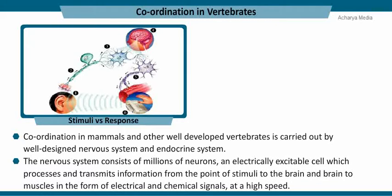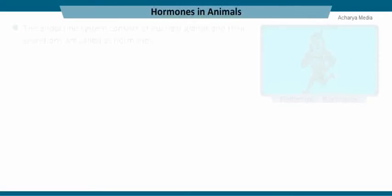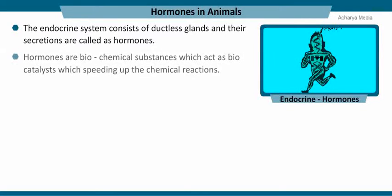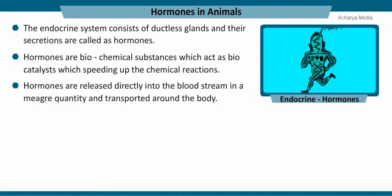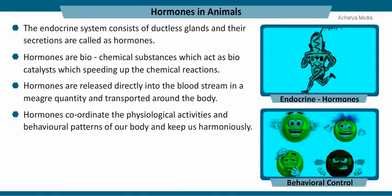Coordination in mammals and other well-developed vertebrates is carried out by a well-designed nervous system and endocrine system. The nervous system consists of millions of neurons, electrically excitable cells which process and transmit information from the point of stimuli to the brain, and from the brain to muscles, in the form of electrical and chemical signals at high speed. These messages are generally called nerve impulses. The endocrine system consists of ductless glands whose secretions, called hormones, are biochemical substances that act as biocatalysts, speeding up chemical reactions. Hormones are released directly into the blood in small quantities and coordinate the physiological activities and behavioral patterns of the body.